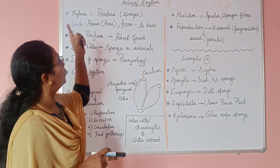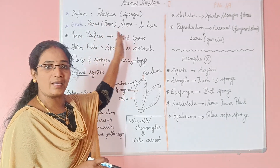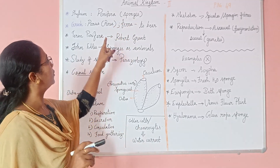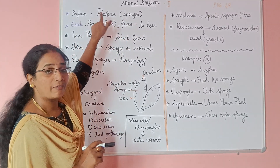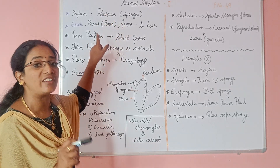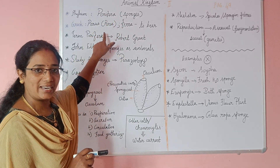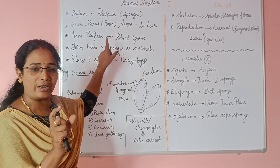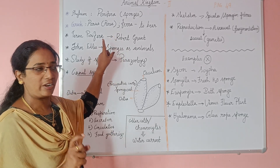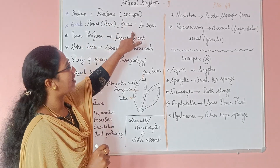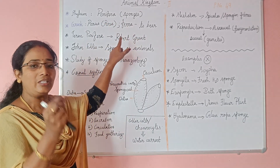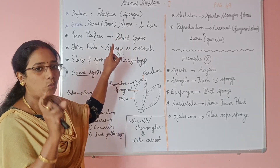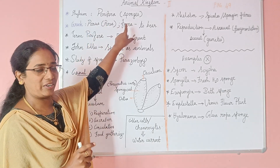We will talk about the phylum Porifera, which includes sponges. In the phylum Porifera, the name is derived from the Greek word. 'Pori' means pores, and 'fera' means to bear. So Porifera means 'to bear pores.'